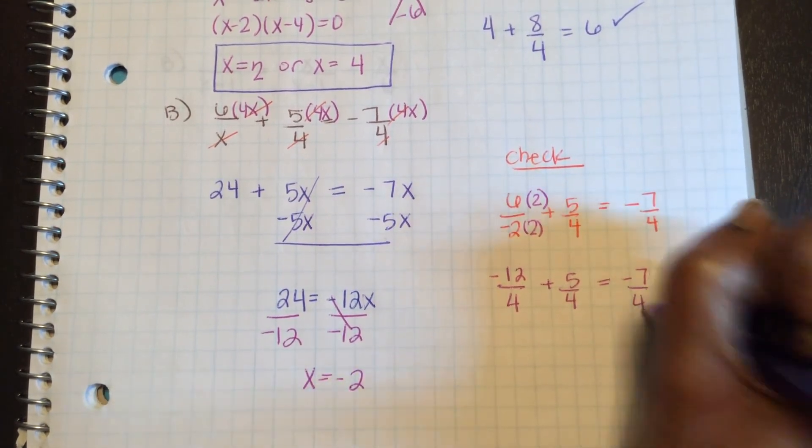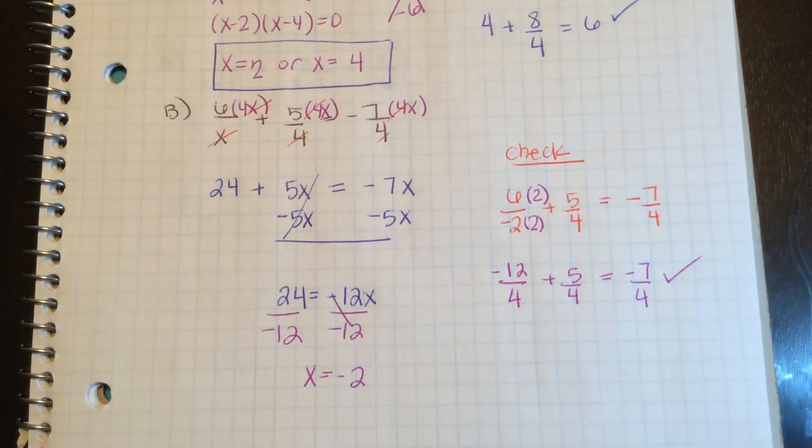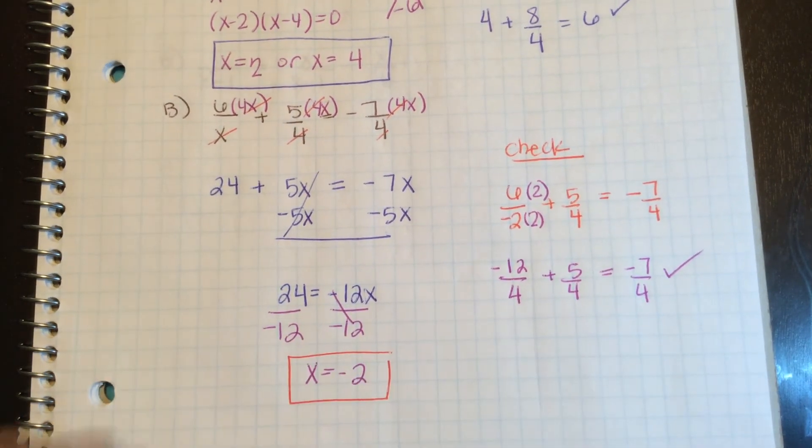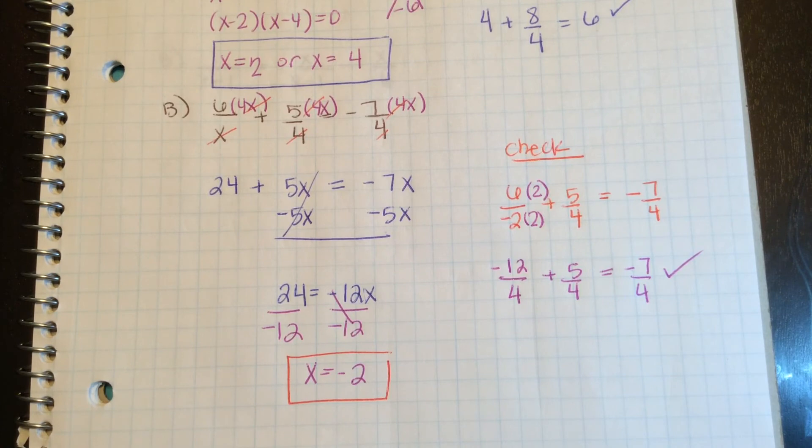Does that equal negative 7 over 4? Yes, it does. Therefore, x equals negative 2 is a solution. It is not extraneous. Let's move on to some more examples.